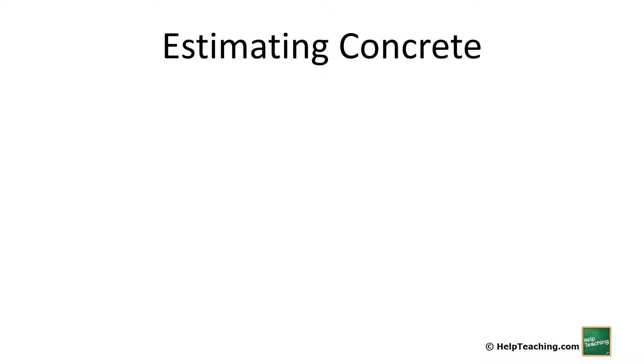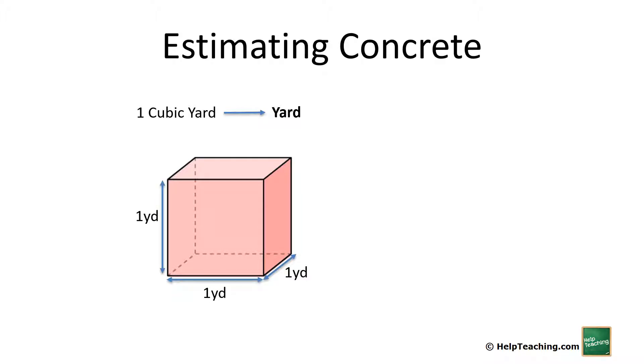Let's begin by looking at how concrete is ordered. One cubic yard, often just called a yard, can be visualized as a cube that's one yard by one yard by one yard. This would also be three feet by three feet by three feet, because one yard is three feet. Three times three times three is 27, so one yard is the same as 27 cubic feet. When talking to a concrete company, they'll just call it a yard, but it is a cubic yard - we're talking volume.